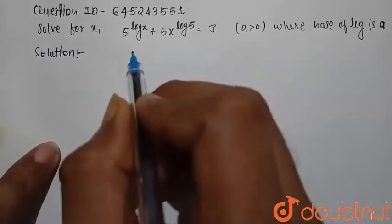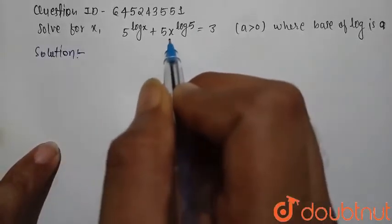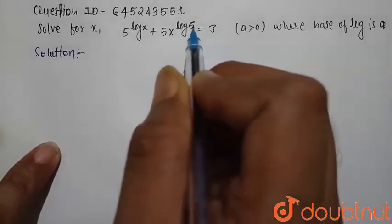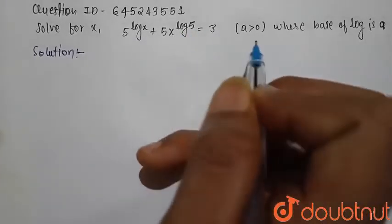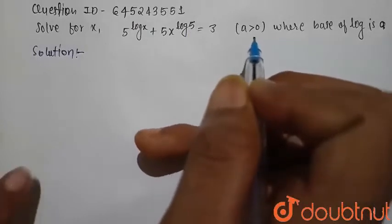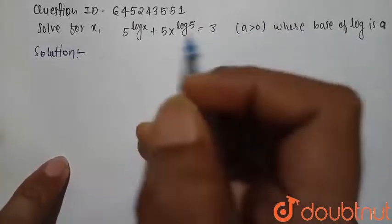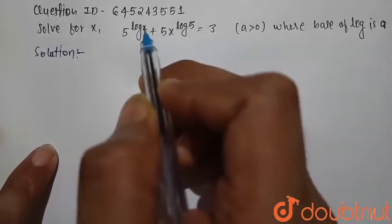Solve for x: 5 raised to power log x plus 5 into x raised to power log 5 equals 3. Where a is greater than 0 and what is a? a is base of log.